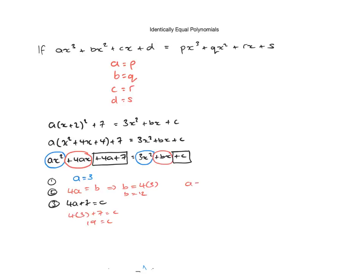So that means a is equal to 3, b is equal to 12, and c is equal to 19. I hope that helps.